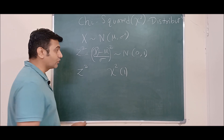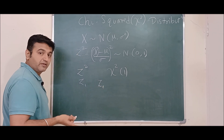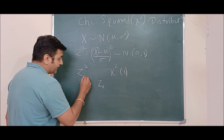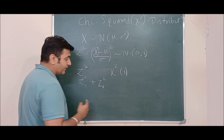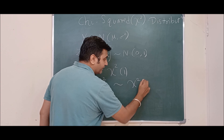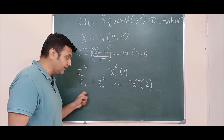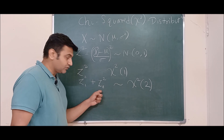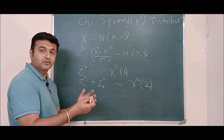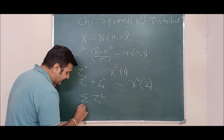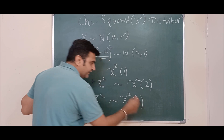Now suppose you have two standard normal random variables Z1 and Z2, both with mean 0 and variance 1. If we square and add them, Z1-squared plus Z2-squared is also a random variable, and it follows chi-square distribution with 2 degrees of freedom — because Z1 has one independent variable X1, and Z2 has one independent variable X2, giving 1 plus 1 equals 2.